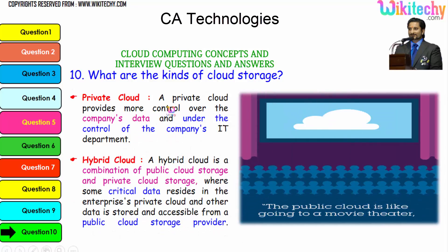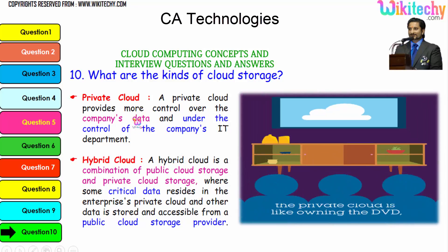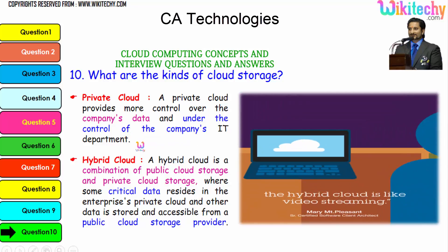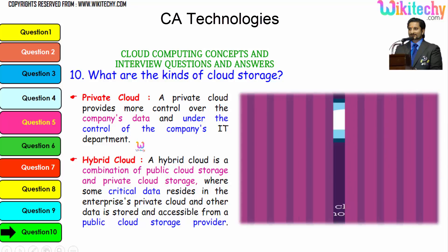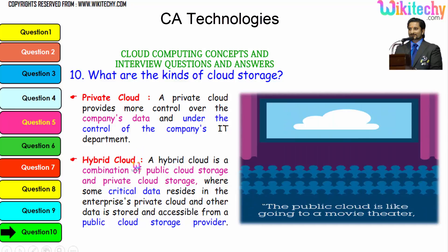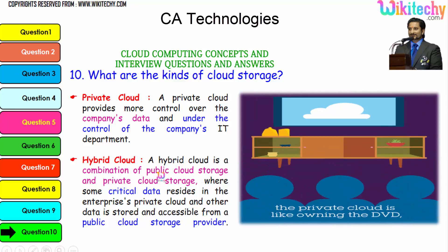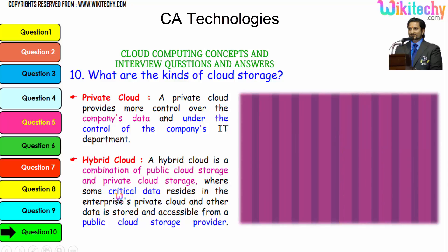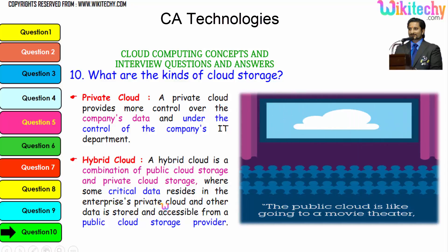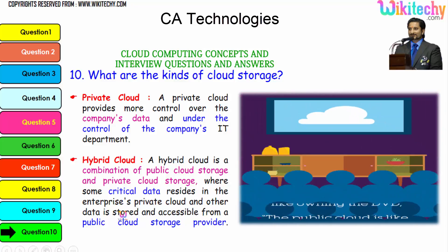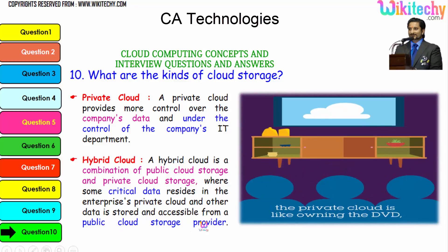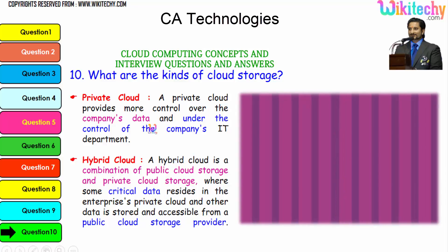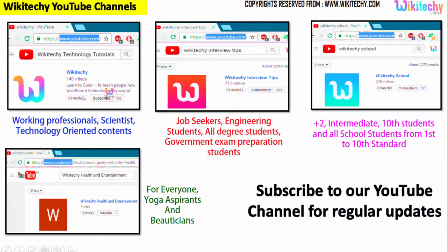A private cloud provides more control over a company's data and is under the control of the company's IT department — it's really private to you. A hybrid cloud is a combination of public and private cloud storage, where critical data resides in the enterprise private cloud and other data is stored and accessible from a public cloud storage provider.